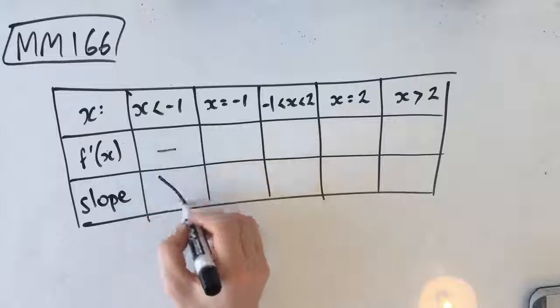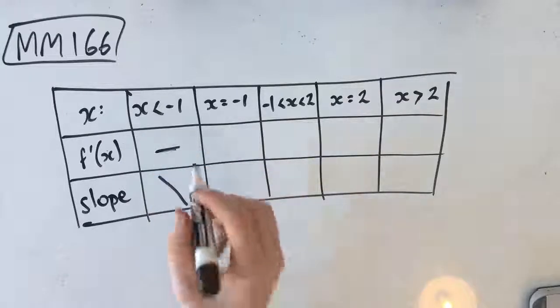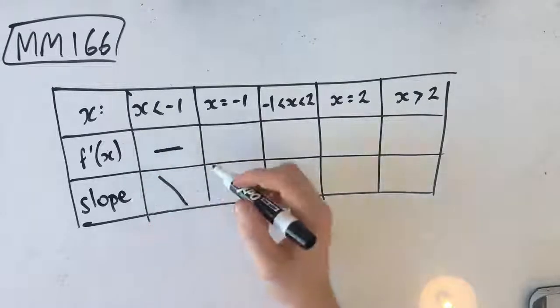A negative slope goes down, right? If you haven't drawn one of these gradient tables before, you should start doing it because it's actually really helpful.